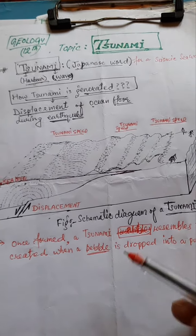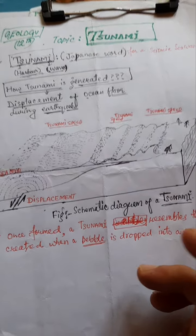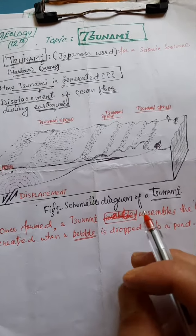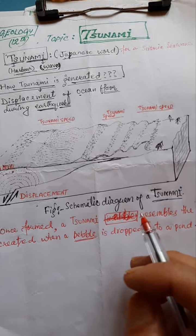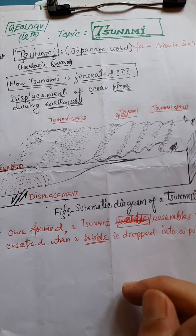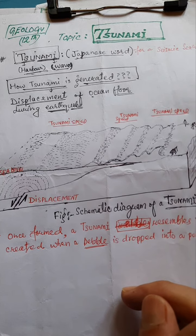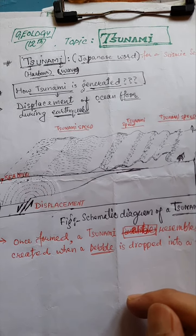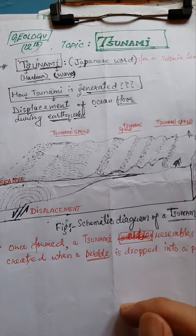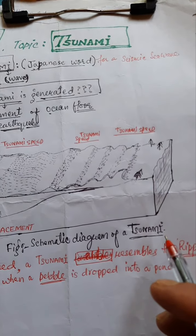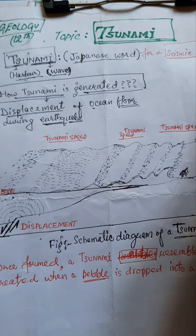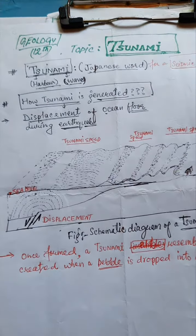Dear students, today's topic is tsunami related. The word 'tsunami' is a Japanese word of Japanese origin. It means 'harbor wave' — 'tsu' means harbor and 'nami' means wave. So tsunami means harbor wave. This word tsunami is used for seismic sea wave, which is a Japanese term.